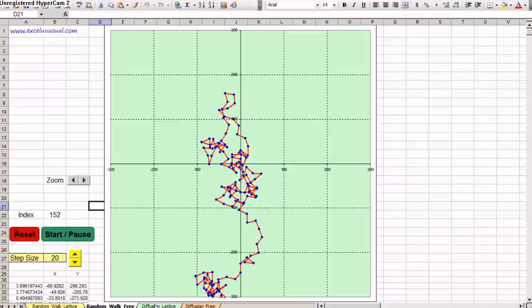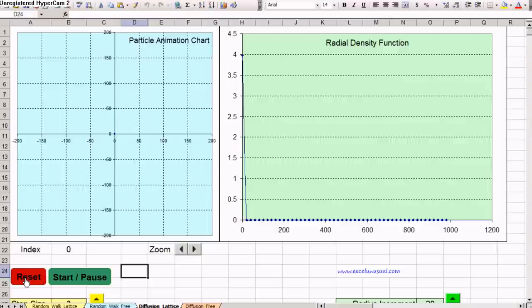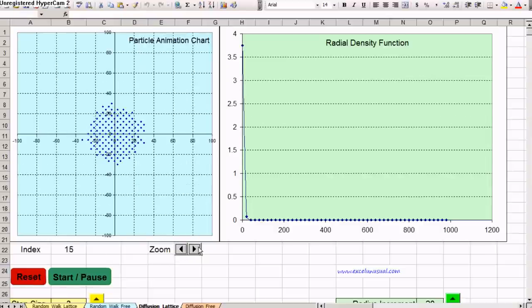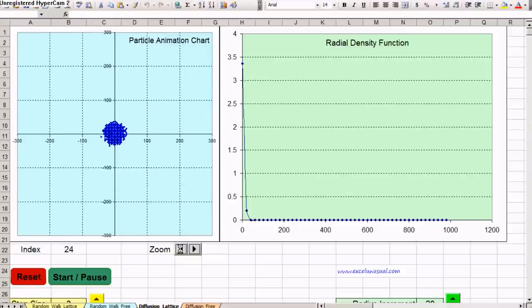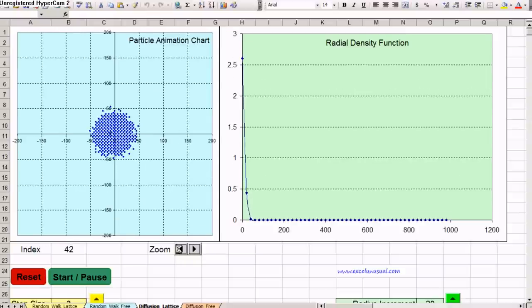The third model is lattice constraint diffusion. It is essentially the first model but now we have 10,000 particles. We can reset it, they all go into the origin. We can start the model, zoom in or zoom out, and we can see they are roaming around and spreading.